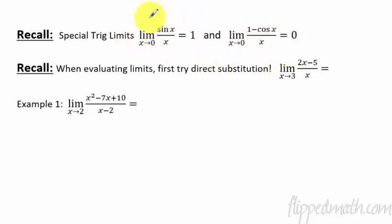What we're going to learn today is if you forget this, L'Hôpital's rule helps us figure them out really quick. Now also remember that when we're evaluating limits, we first need to try direct substitution. So that means if x is approaching 3, we just need to plug in a 3. So it's going to be 2 times 3 minus 5 all over 3, which equals 1/3.